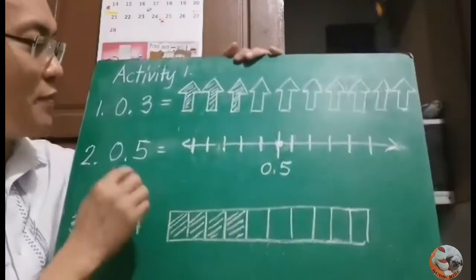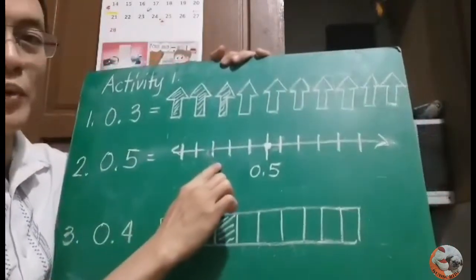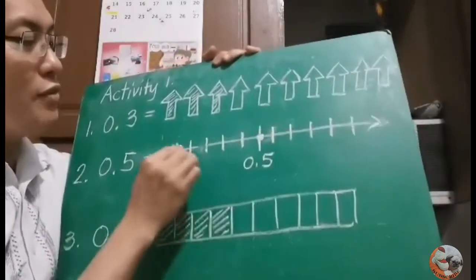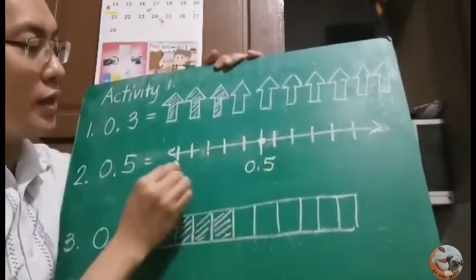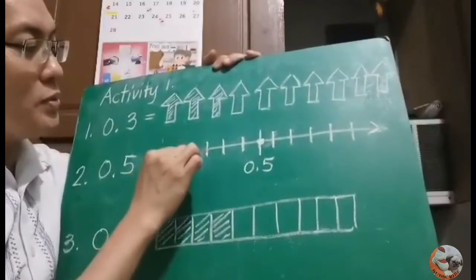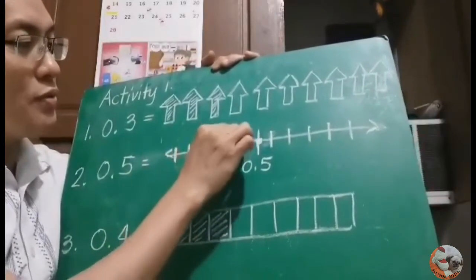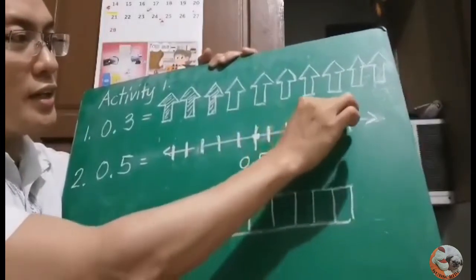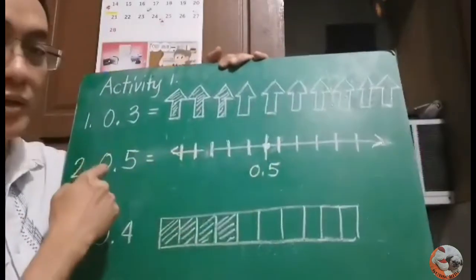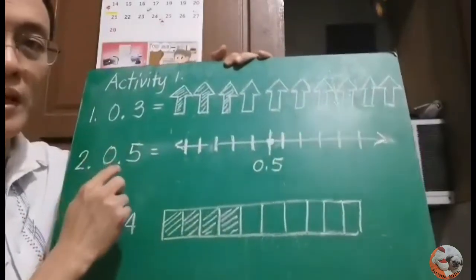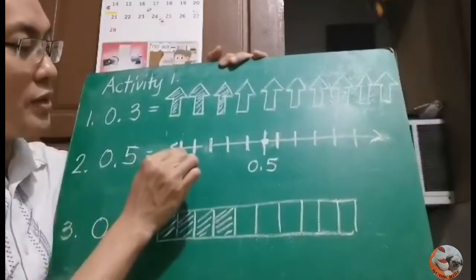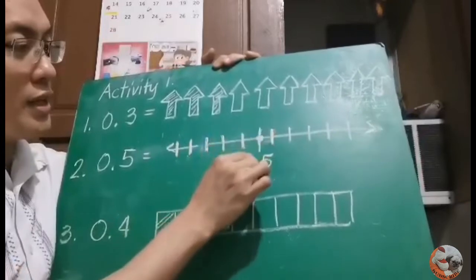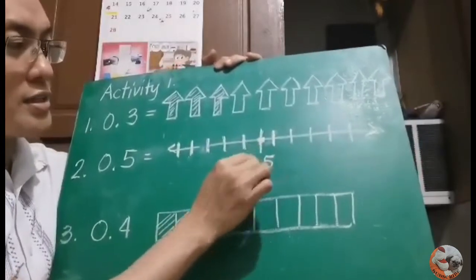How do you visualize 5 tenths using a number line? Draw a number line and divide it into 10 parts: from 0, 1, 2, 3, 4, 5, 6, 7, 8, 9, 10. Since I'm visualizing 5 tenths, count from here: 1, 2, 3, 4, 5. And that is 5 tenths.